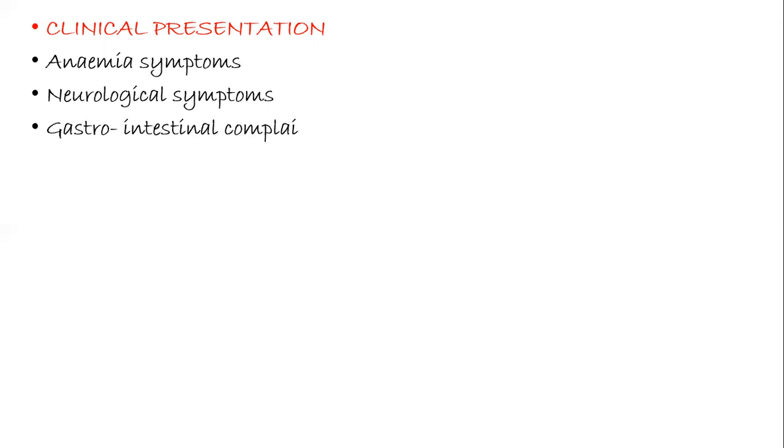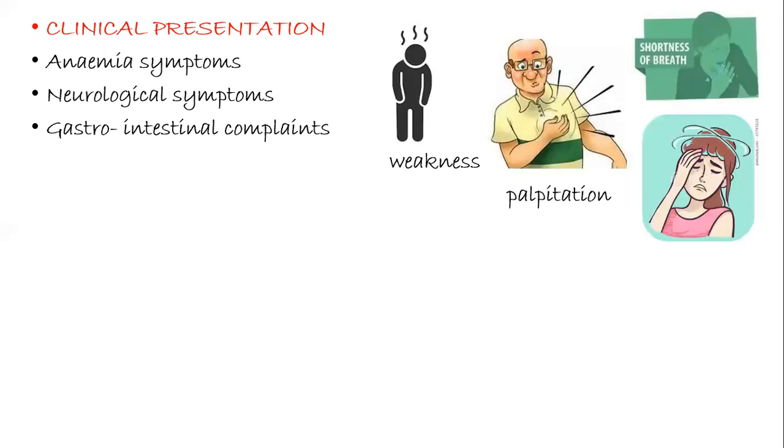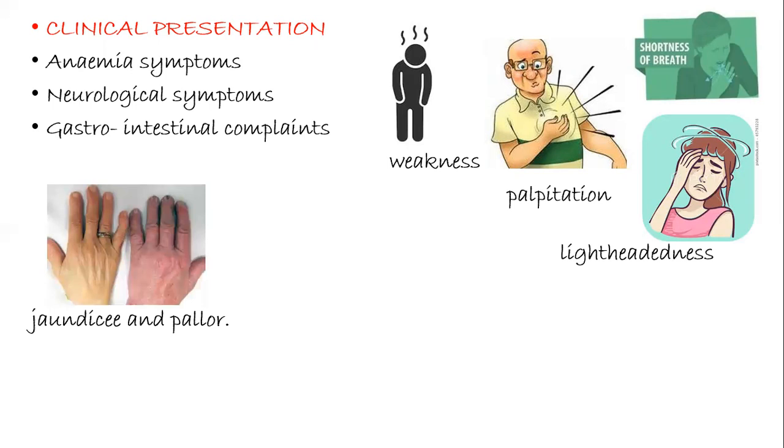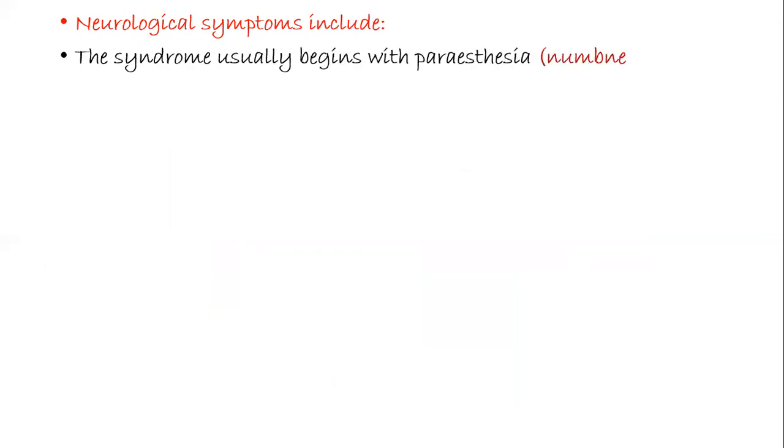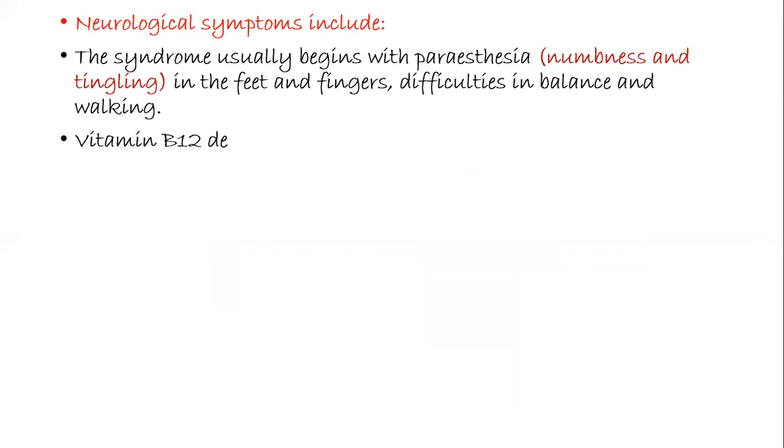Now we will look at the clinical features. The first one is this type of anemia is going to show you the symptoms of anemia. Along with that, it is going to show some neurological symptoms and some gastrointestinal complaints. Other symptoms are weakness, palpitation, shortness of breath, lightheadedness, pallor or jaundice, premature graying of hair, and lack of energy. Neurological symptoms include the syndrome usually begins with paresthesia - that is numbness and tingling sensation in the feet and fingers - and difficulty in maintaining balance and walking.